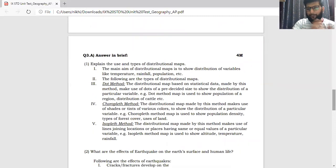Alright, let's proceed to the next question. Now the answers in detail or answer in brief are there. So these are basically for 4 marks. Let's see. Explain the use and types of distribution maps. So the main aim of distribution maps is to show distribution of different variables. Like temperature, rainfall, and population. These following types of distribution maps have been seen. The first one being dot method. Children, whenever you are writing a type of map, please underline it.